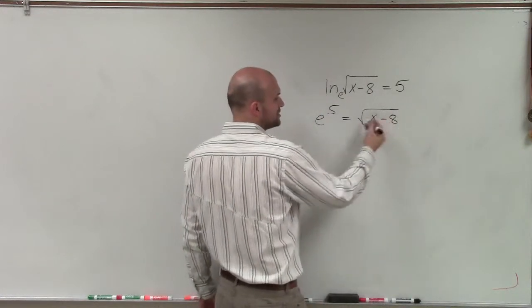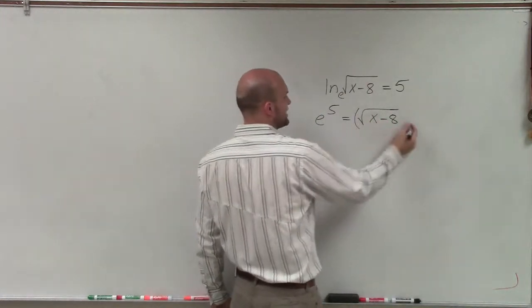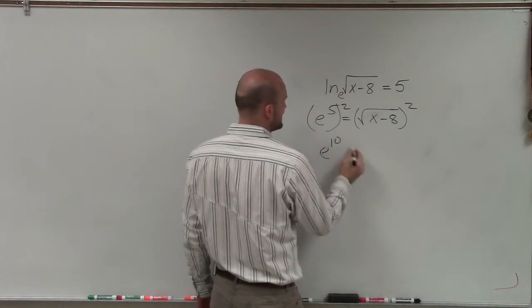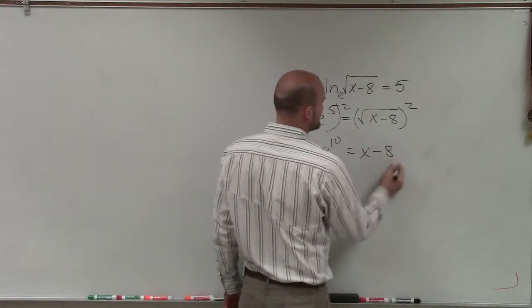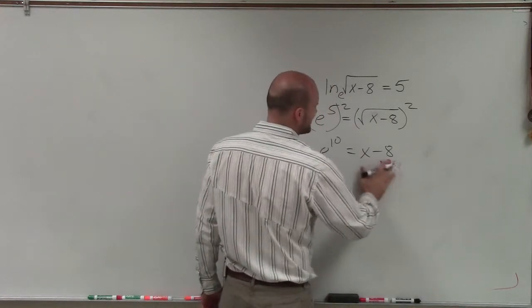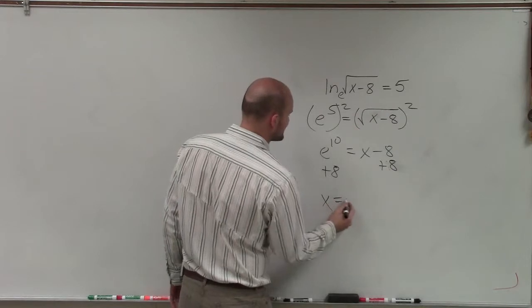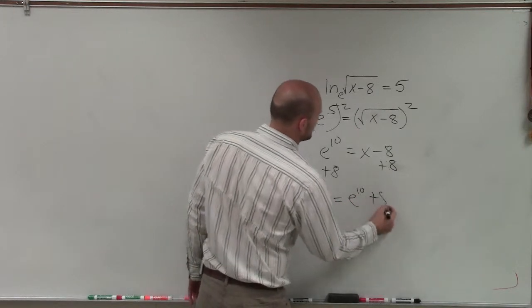Then to solve for x, to undo my operations, I need to undo the square root. So I'd square both sides. So now I have e to the tenth equals x minus 8. And then I can simply just add 8 to both sides. So therefore, x equals e to the tenth plus 8.